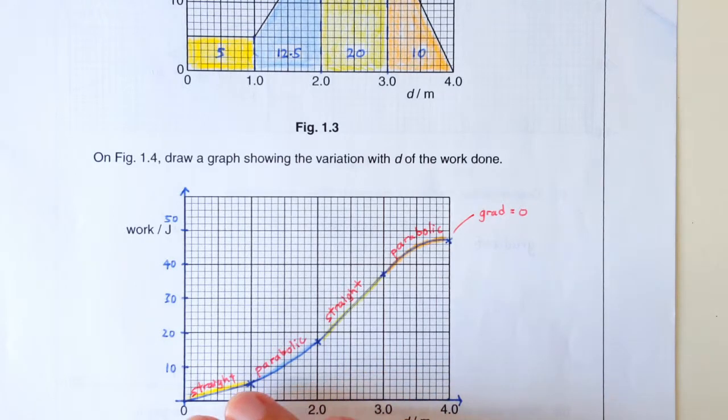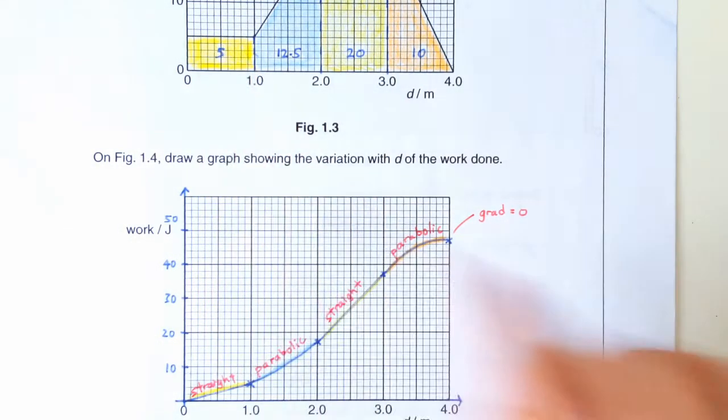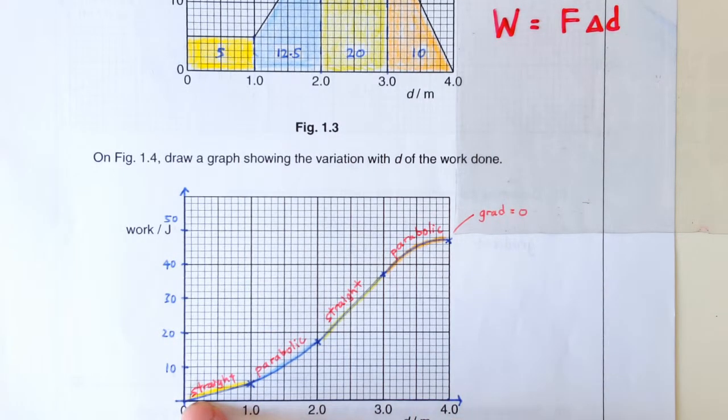So we've got to join the curve, of course. So during this segment here, because the force is constant, we are doing work at a constant rate. If you do work at a constant rate, the work should increase linearly.